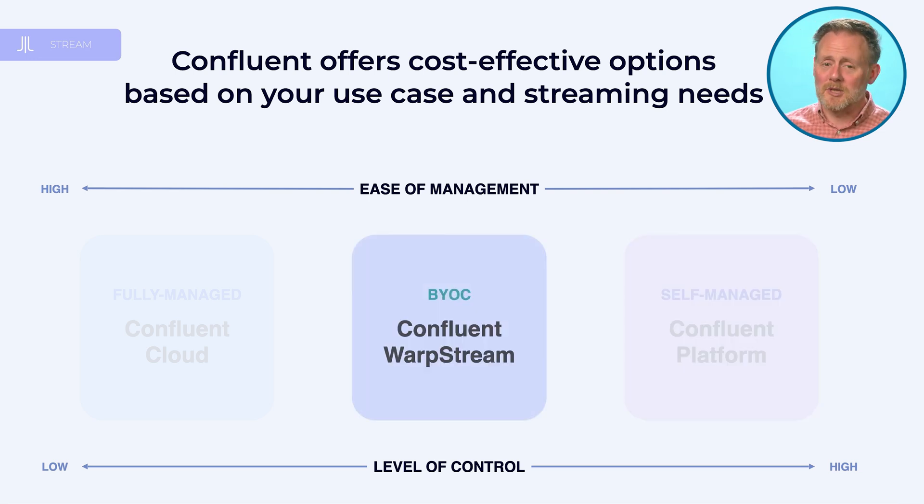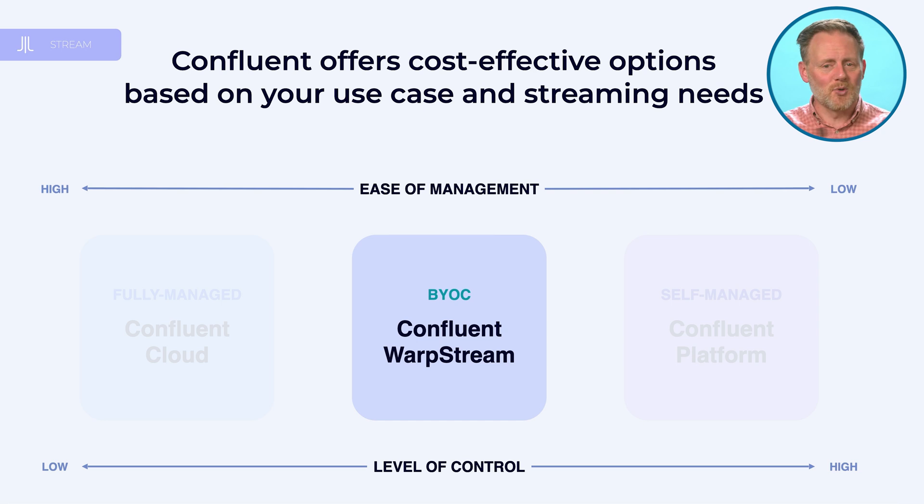In the middle, there's Confluent Warpstream — a relatively new addition, as of the time of this recording — that offers a really compelling, different architecture to run Kafka, where all of the data is stored in S3 or the cloud blob store of your choice. This gives you a bring-your-own-cloud kind of solution where all of the data is yours. The components that act like brokers are all in your infrastructure. Confluent never has any access to your data — they simply don't have the ability to see it. It's optimized for latency-insensitive use cases, and while there is a trade-off in latency since all the data is in S3, it's really compelling stuff worth checking out.